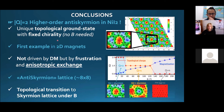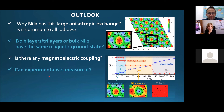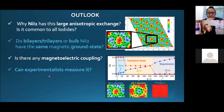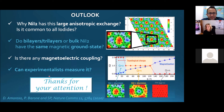Let me wrap up. We have a Q=2 anti-skyrmion lattice in NiI₂—the first example discovered in a two-dimensional magnet. It is a lattice and there is a topological transition under applied field. Open questions remain: we lack a full understanding of why NiI₂ has such large anisotropic exchange; we have no rules of thumb for when anisotropic exchange is large or small; we haven't studied bilayer, trilayer, or bulk; and there is potential coupling between ferroelectricity and magnetism to explore. It would be great if experimentalists could study this system.